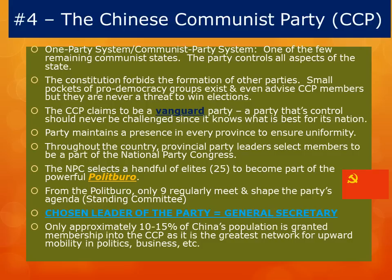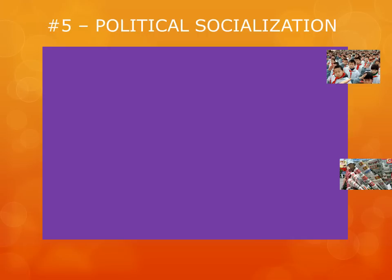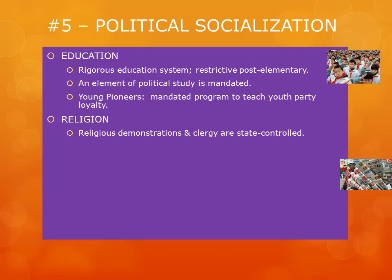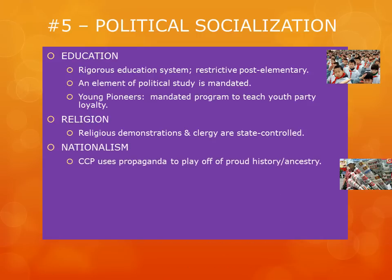Only approximately 10–15% of China's population is actually granted membership into the CCP, because once you're in, you have a great opportunity for upward mobility in the political arena and in the business world. The CCP institutes several methods of political socialization to keep control of the people, including control of the education sector. There is an element of political study that is still mandated. All Chinese youth are also expected to participate in the Young Pioneers program, which teaches them about party loyalty. The CCP also taps into the proud history of the Chinese people using propaganda that rallies people under the party's control.